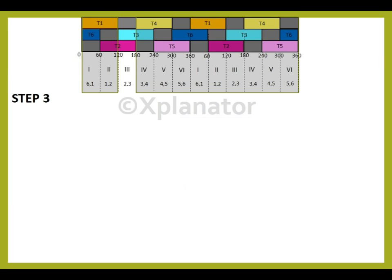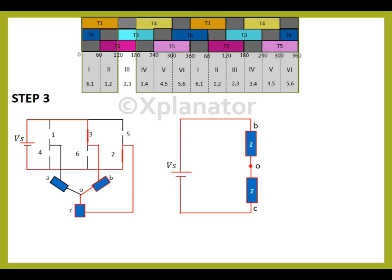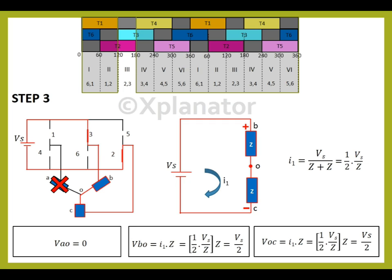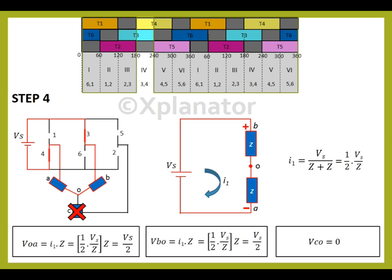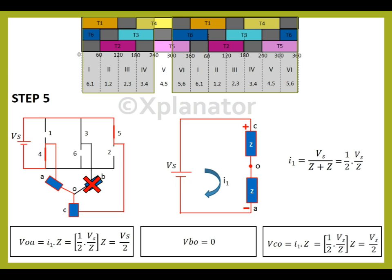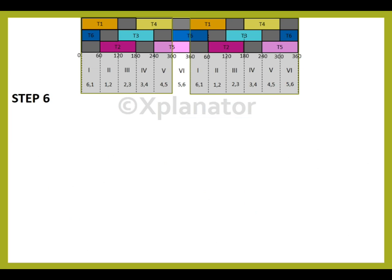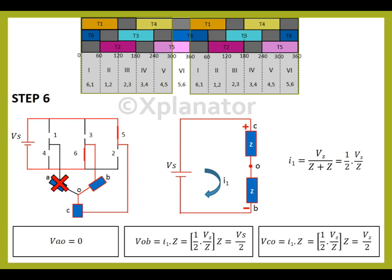In step 3, thyristors T2 and T3 are working together. The terminal A is not connected. The value of the current in the circuit will remain the same, but the voltage values are different. In step 4, T3 and T4 conduct at the given instance of time. The voltage values are changing as per impedance values. In step 5, thyristors 4 and 5 work together. And in step 6, 5 and 6 conduct together.